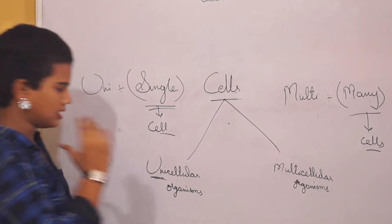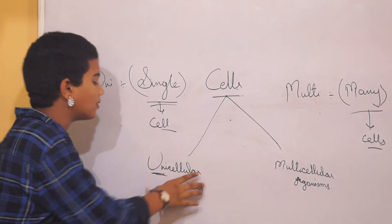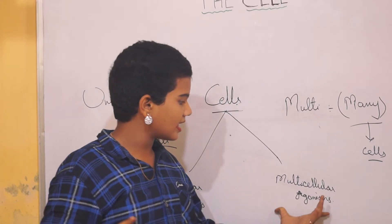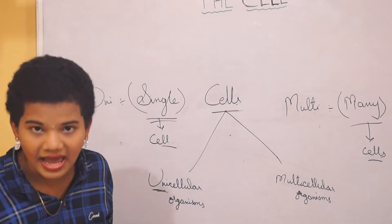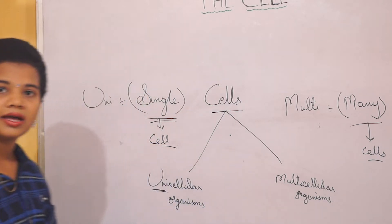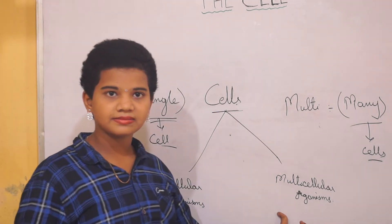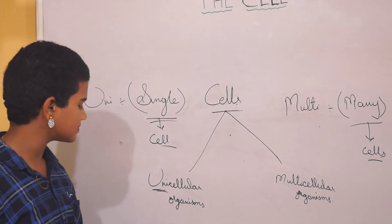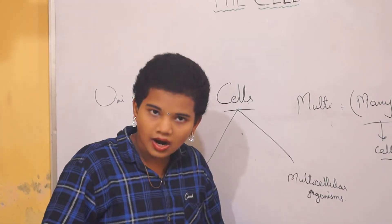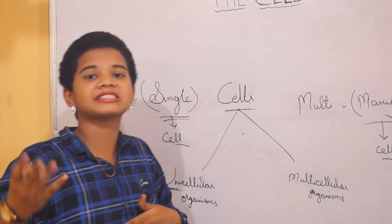Examples of unicellular organisms are Chlamydomonas, bacteria, amoeba, and paramecium — these have only one cell. Organisms which have more than one cell are called multicellular organisms, such as animals and plants. Examples of multicellular organisms are plants and animals, which contain billions and trillions of cells.